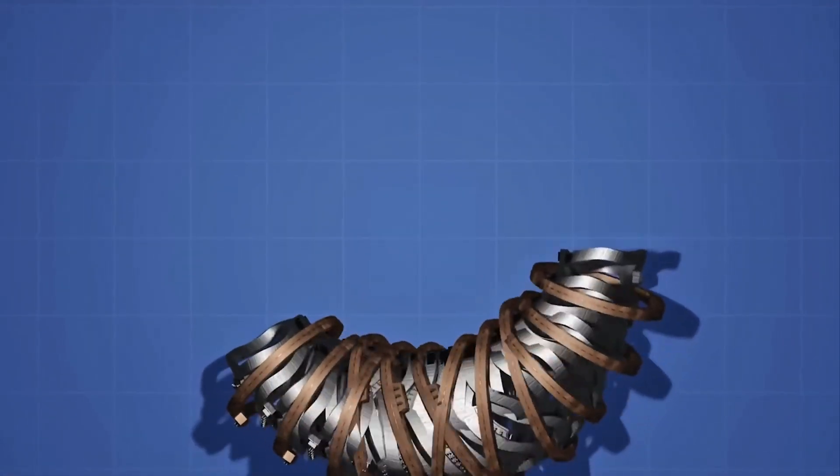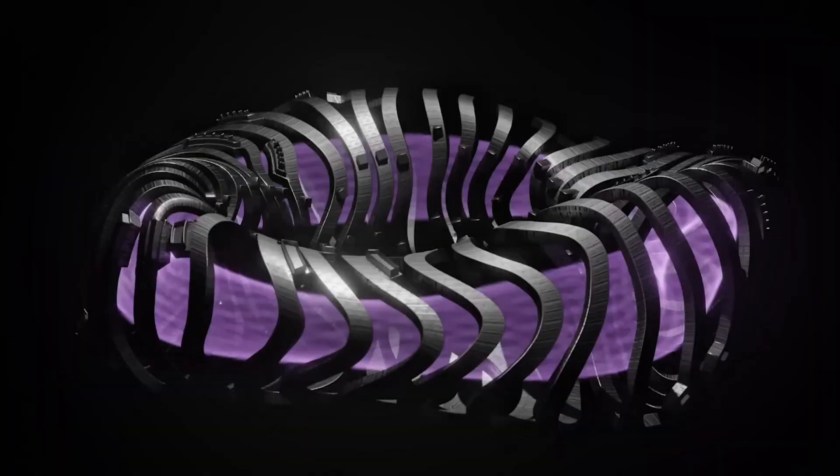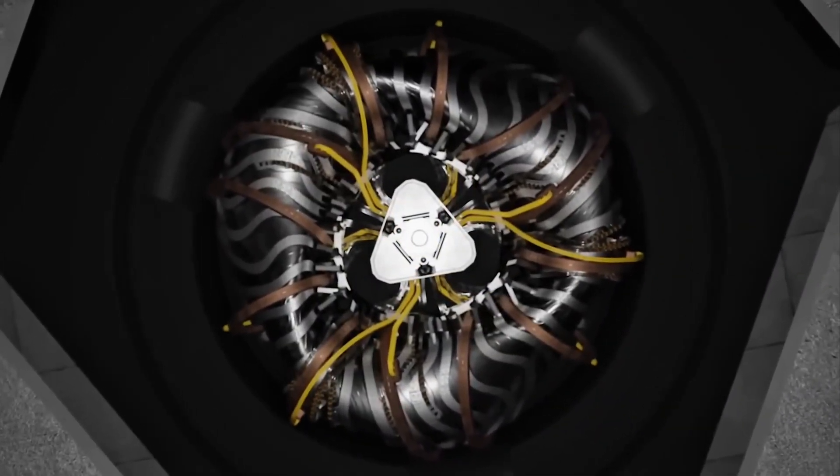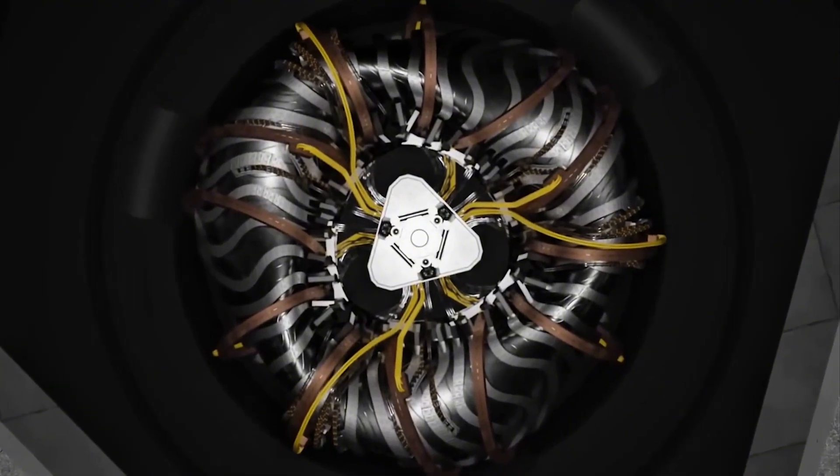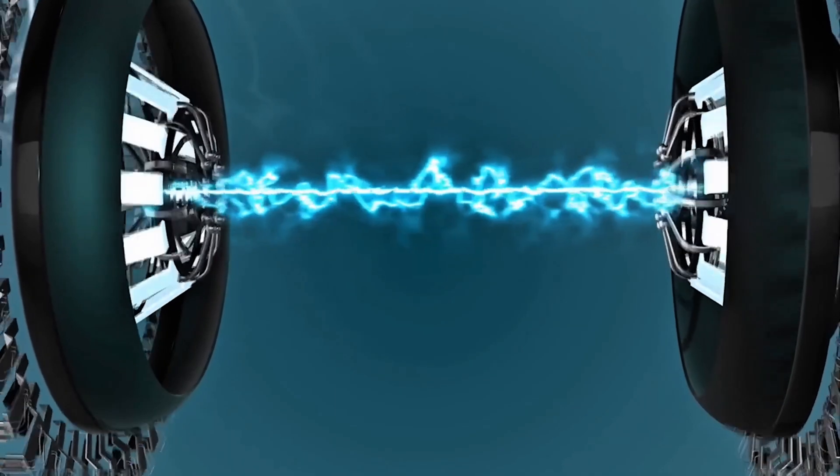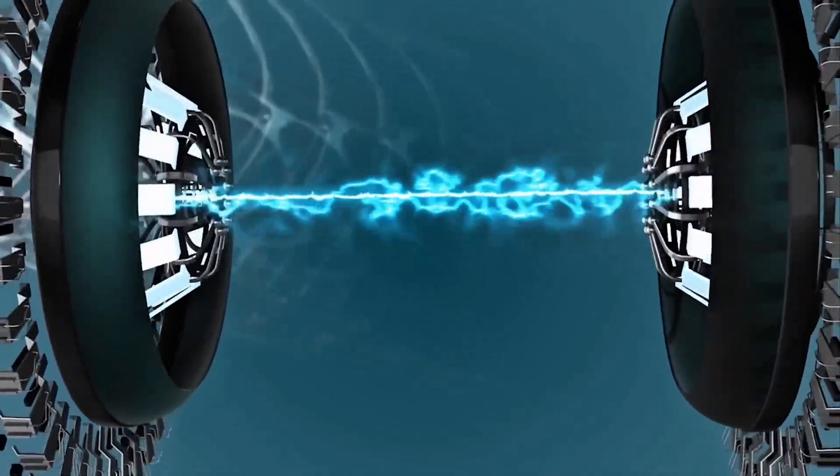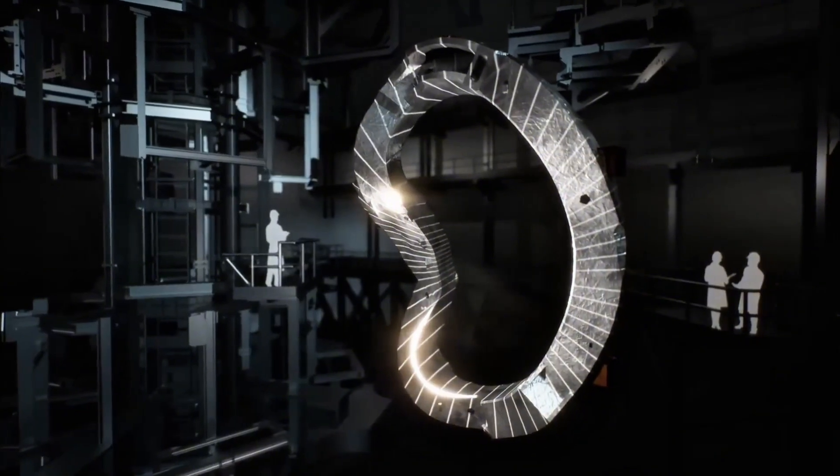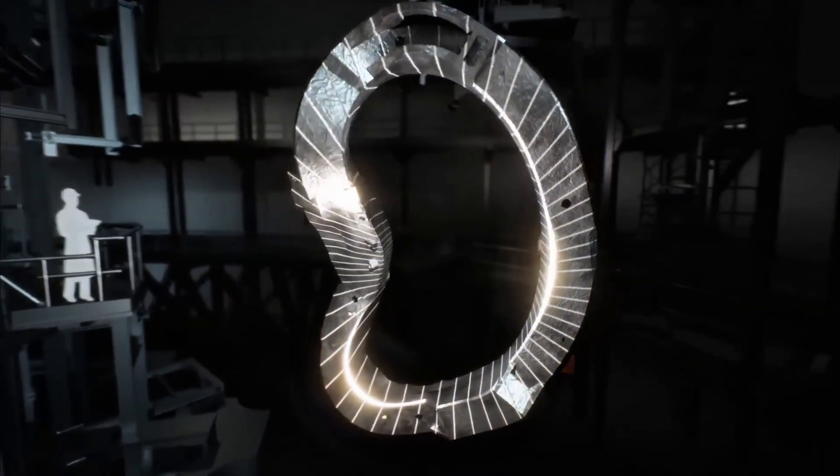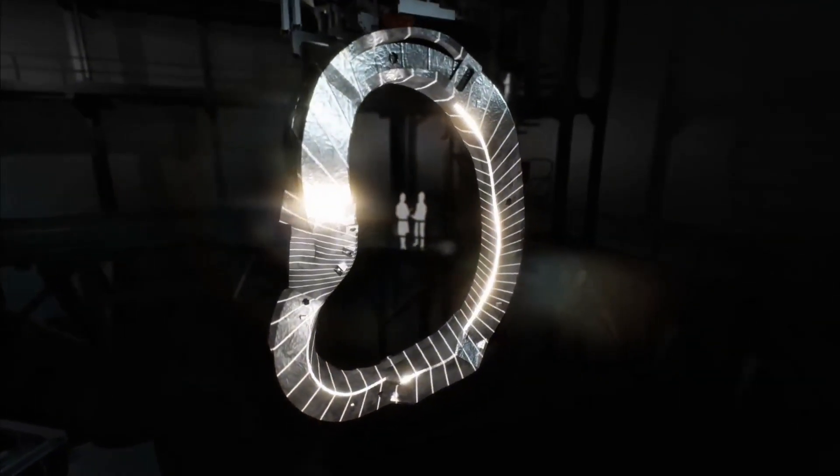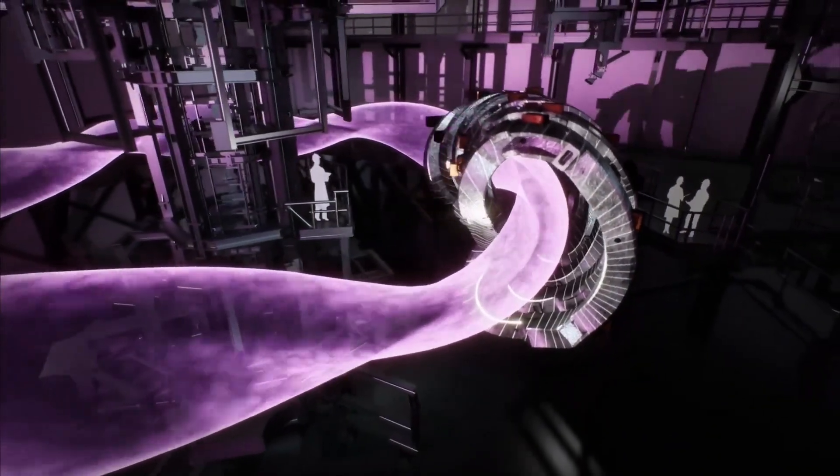However, tokamaks come with important limitations. They typically operate in pulses rather than continuously, because the transformer effect only works for a limited time. The internal plasma current can also cause instabilities. If the current goes out of control, it can lead to a disruption that damages the machine. These issues have made continuous, reliable operation challenging with tokamaks.